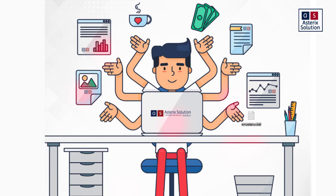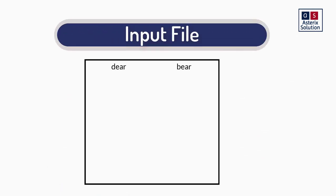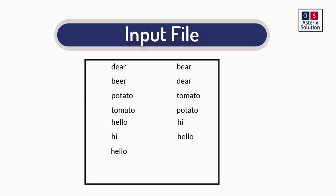Let's say I have a text file which contains all types of different words. This is my input file — a hypothetical situation. The file contains the following keywords: deer, beer, beer, deer, potato, tomato, tomato, potato, hello, hi, hi, hello, again, hello, hi, dear, and dear.